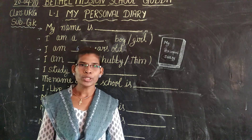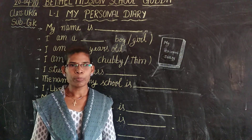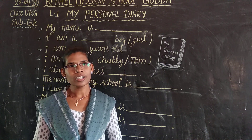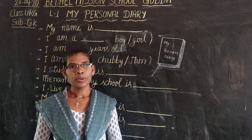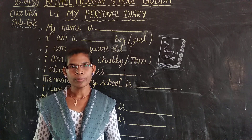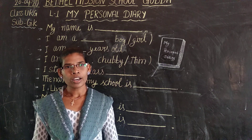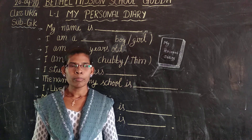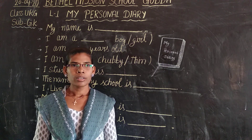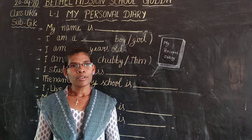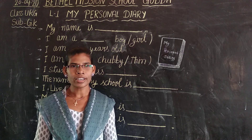So in personal diary, what do you understand, children? Do you understand anything about personal diary? In personal diary we write our name, class, our age, our father's name, mother's name, our friend's name, our hobbies and our interests. So these all things we write in our personal diary.